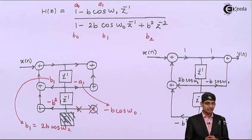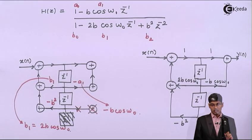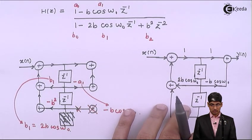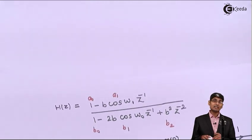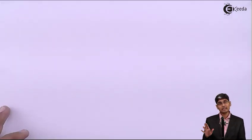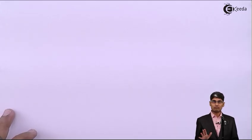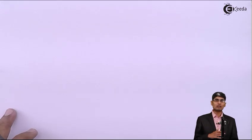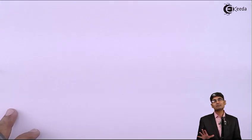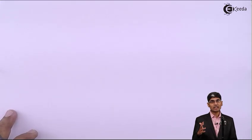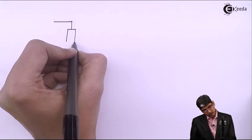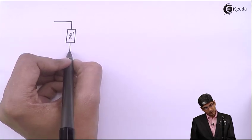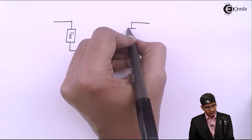We have finally reached the complete Direct Form 2 structure. Now let us see how a Direct Form 1 structure would look and how many delay blocks it requires, just to show the difference. In Direct Form 1, I will have two separate strings of Z-inverses: one for the numerator — which has only one Z-inverse — and one for the denominator — which has two Z-inverses.